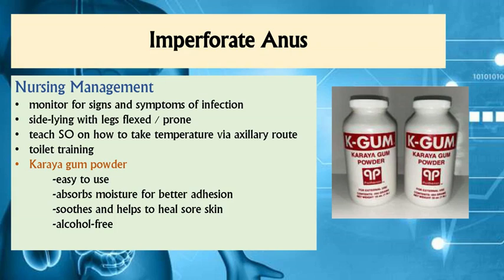Nursing management for imperforate anus includes monitoring for signs of inflammation and infection, noting their cardinal signs and symptoms. Parents should be instructed to position the client in a side-lying or prone position to relieve pressure over the anus. Educate significant others on how to assess temperature using alternate routes. Toilet training is vital with the help of a colostomy bag if indicated, and the use of karaya gum powder for infection control.